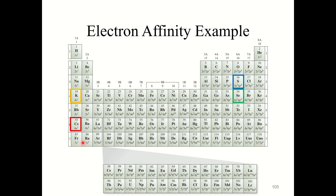Knowledge check: arrange the elements S, Se, Cs, and K in order of increasing EA1. The correct answer is C: cesium is closest to the bottom left and has the smallest magnitude electron affinity, then potassium, then selenium, then sulfur, which has the largest electron affinity. Sulfur wants electrons the most out of these four elements.